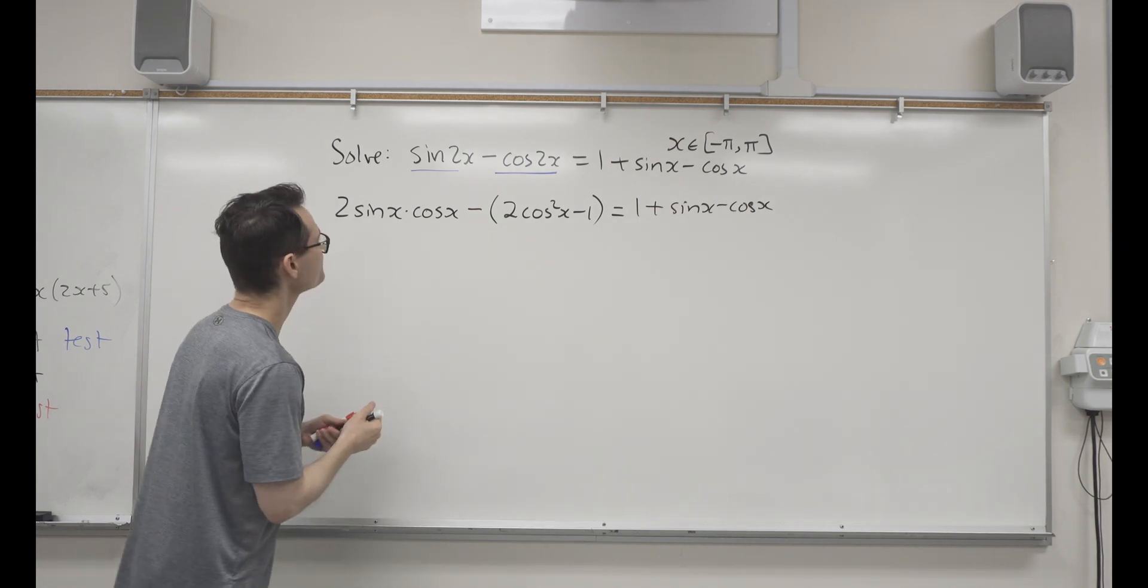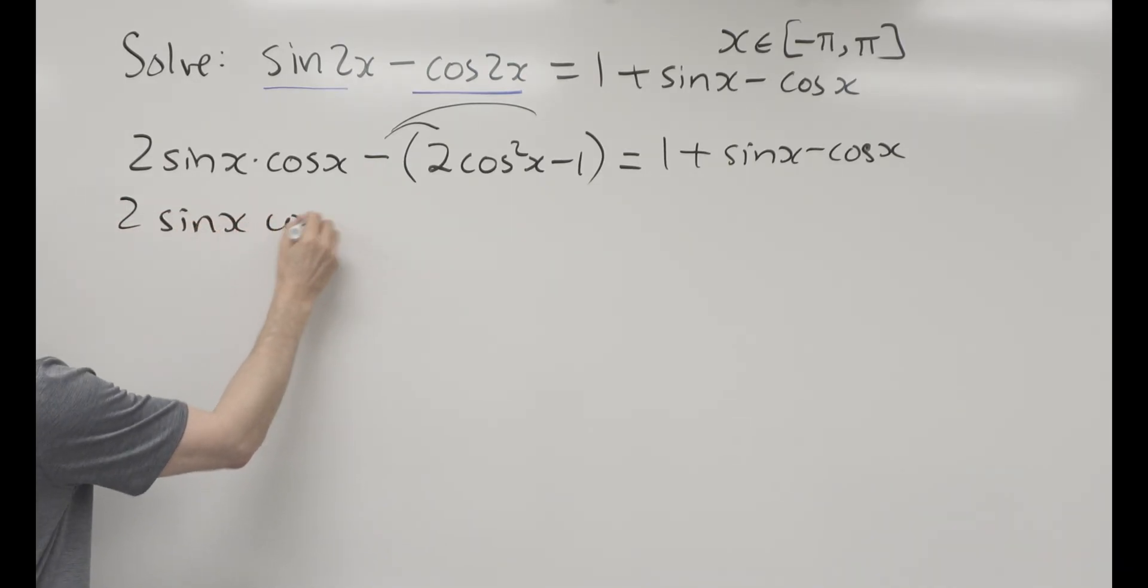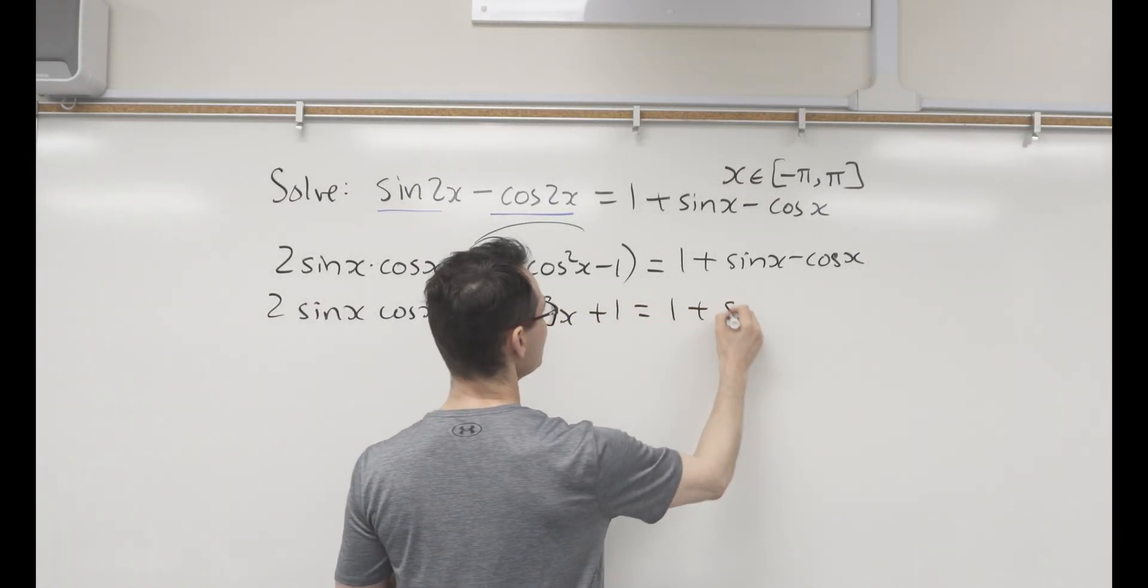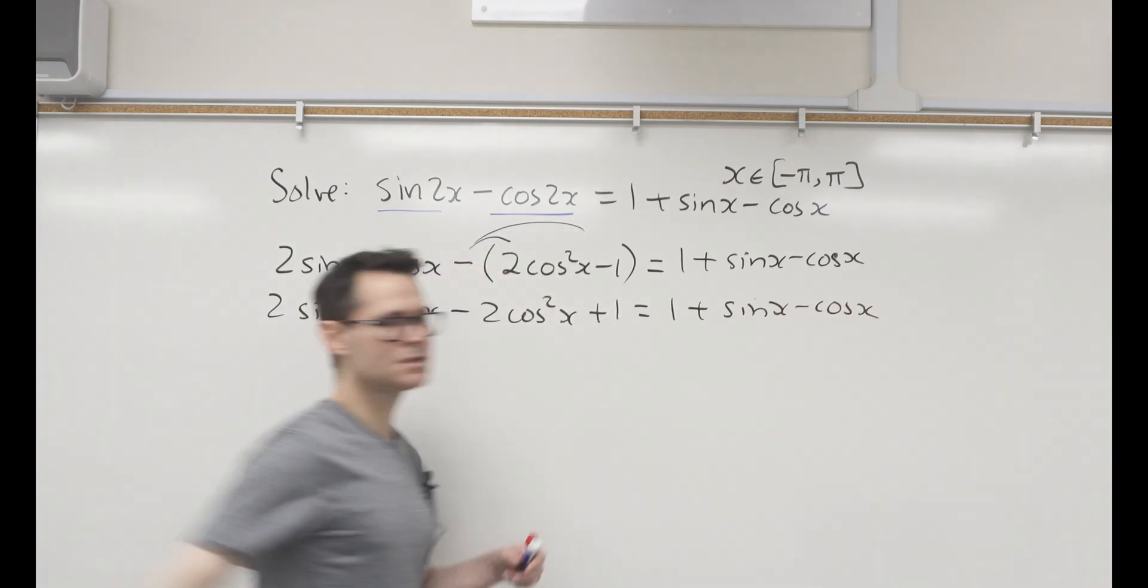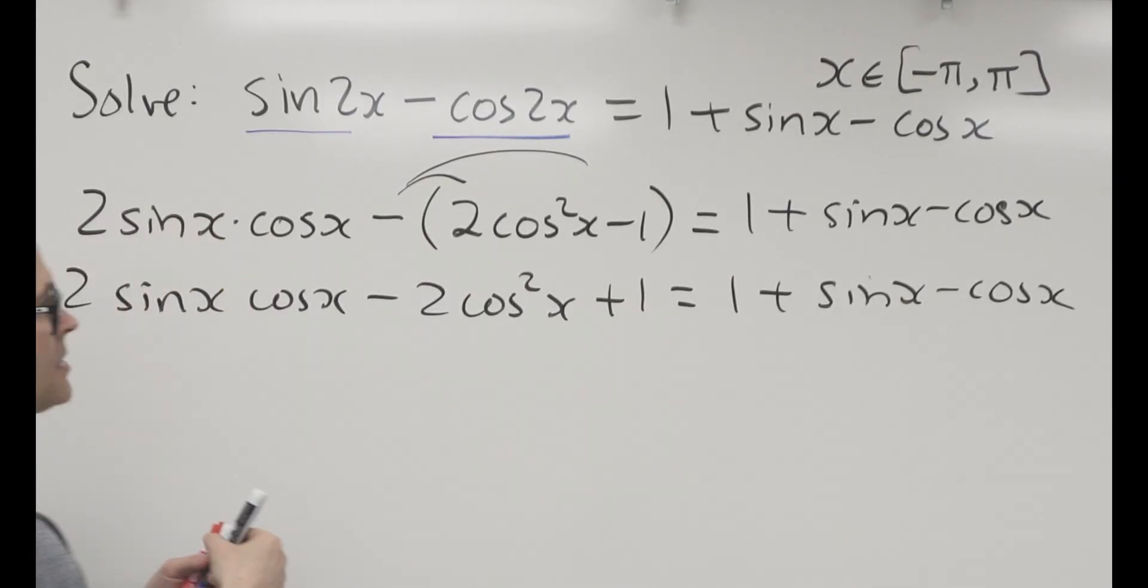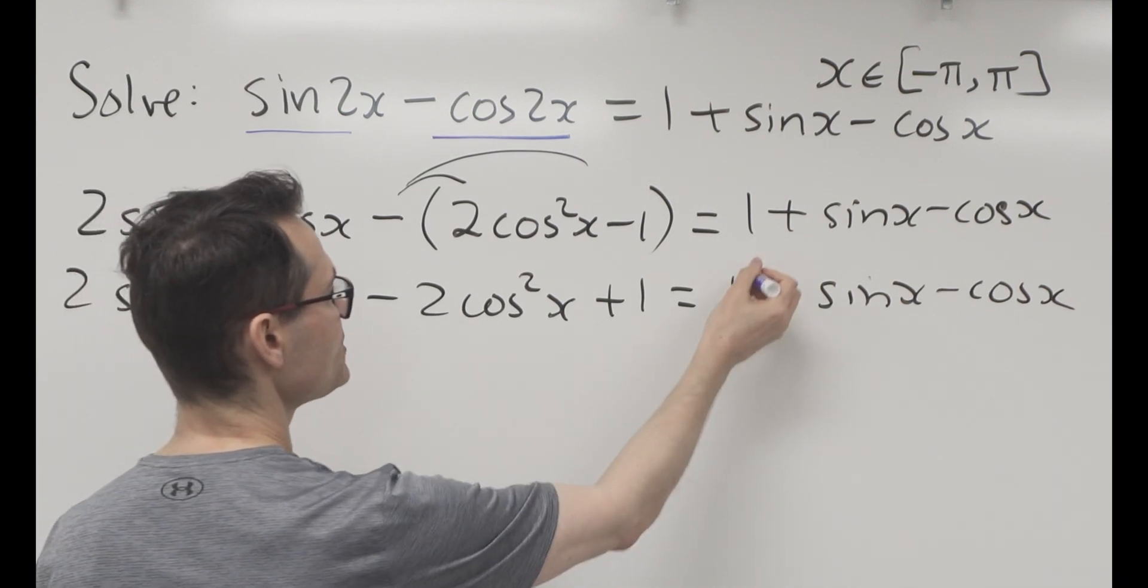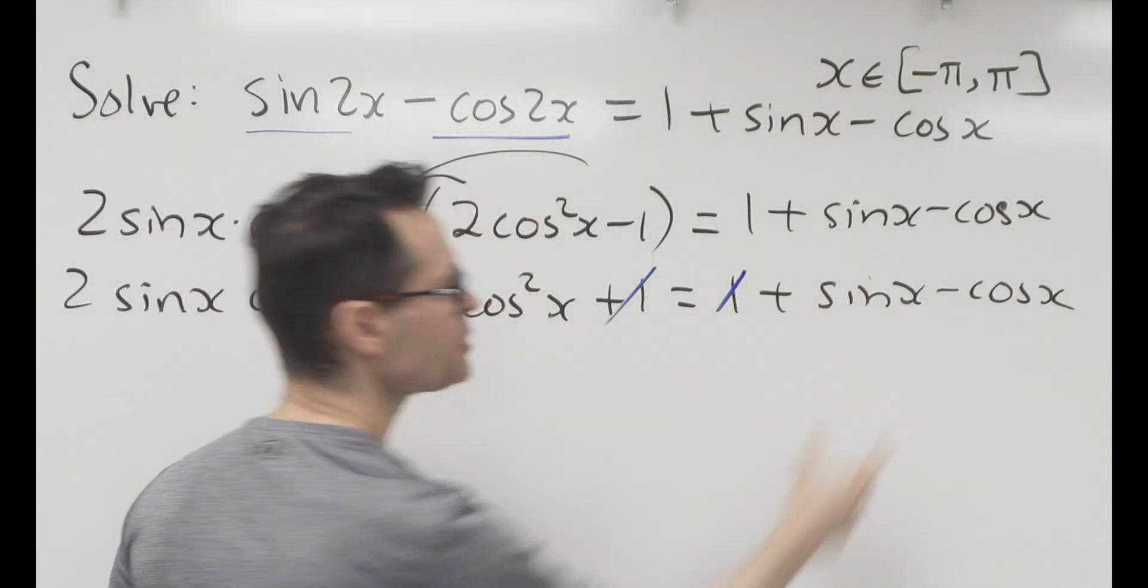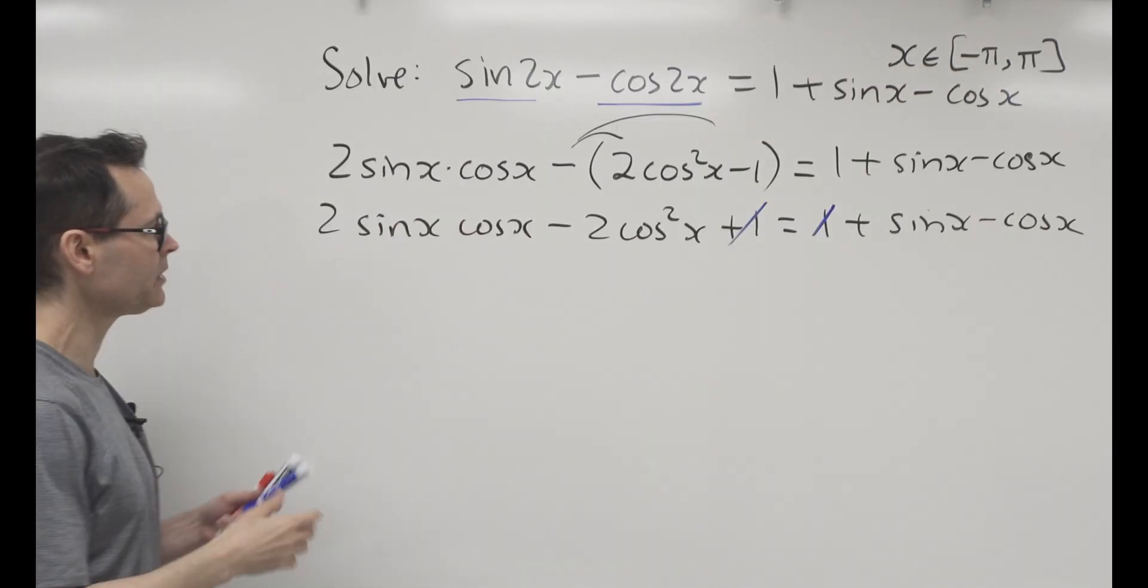2 sine x cos x minus 2 cosine squared plus 1 equals 1 plus sine x minus cos x. So far, so good. Notice, my friends, that we get an opportunity to cancel these ones. At least it reduces it now to 1, 2, 3, 4 terms. There's 4 terms on the table here.